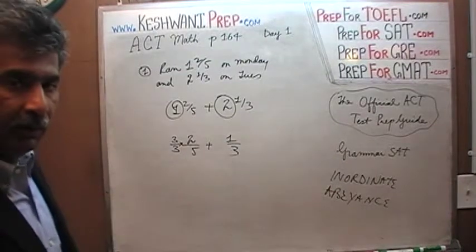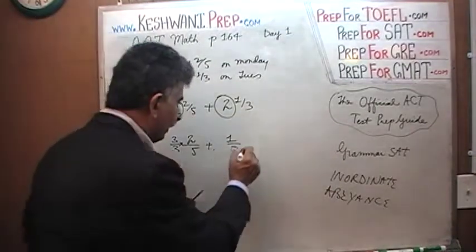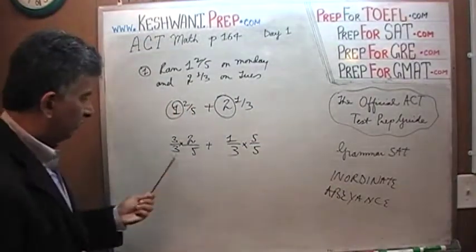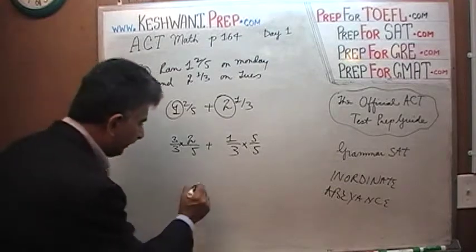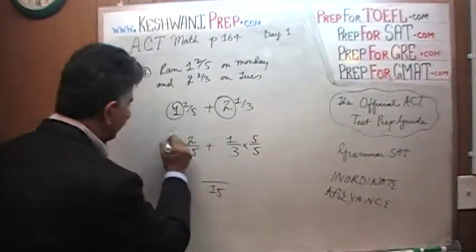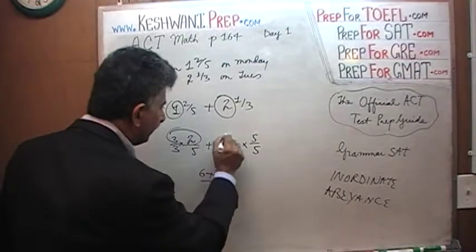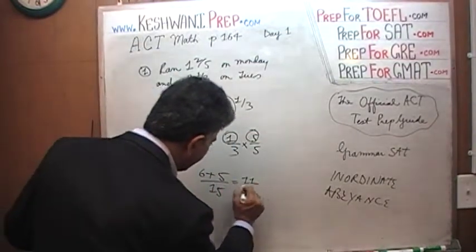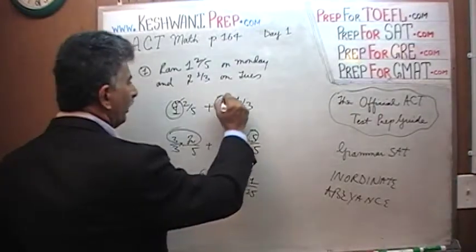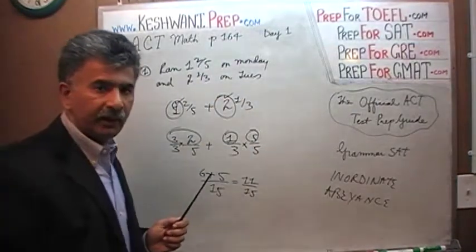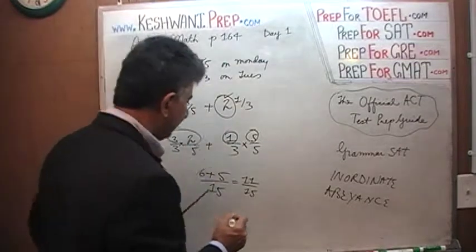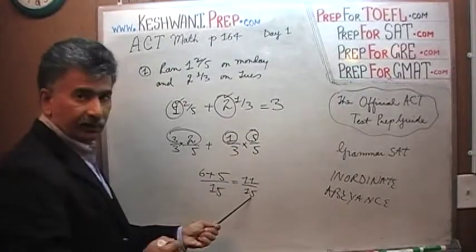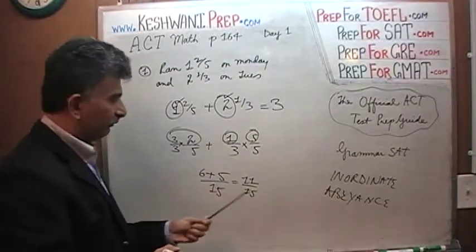We multiply 1/3 by 5/5 so it also has denominator 15. Now both fractions have denominator 15: 3 times 2 gives 6, and 1 times 5 gives 5, so we get 6/15 + 5/15 = 11/15. Don't forget the 1 and 2 we kept in abeyance — 1 plus 2 is 3. The final answer is 3 and 11/15.